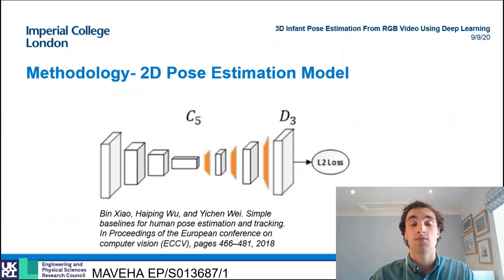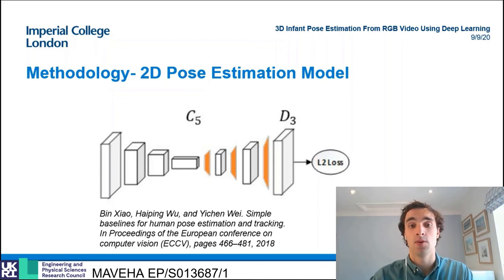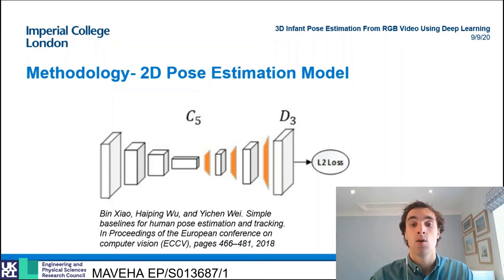The work of Zhao et al. provided a simple baseline for this heat map approach and formed the basis of this project's 2D model. It is formed of a ResNet-50 backbone to which four deconvolutional layers are added, which upsample the low-level features of the ResNet backbone to produce an output of k×64×64 heat maps, where k is the number of key points.